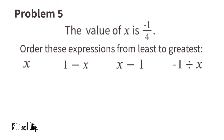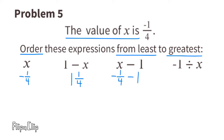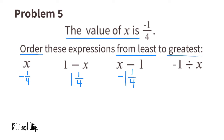Problem number five: the value of x is negative one-fourth. Order these expressions from least to greatest. Since x equals negative one-fourth, we evaluate each. One minus x equals one minus negative one-fourth, which is one and one-fourth. x minus one equals negative one-fourth minus one, the same as negative one-fourth plus negative one, which equals negative one and one-fourth.